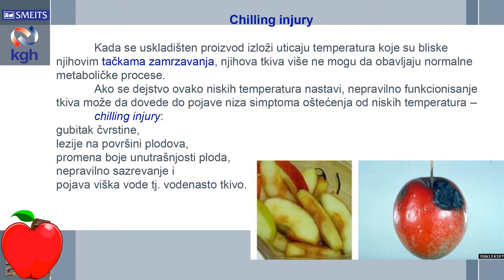The symptoms of low temperatures include chilling injuries — lesions on the surface of the produce, changes of color and texture, undesirable ripening and post-ripening of species that can ripen, and also the appearance of water, i.e., water on the tissue. These are typical physiological injuries, and the data are shown in the image.